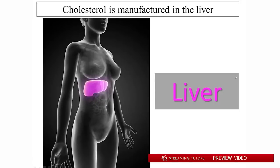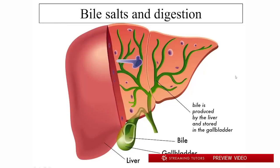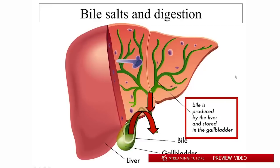Cholesterol is made de novo in humans in the liver and is then released as LDL particles to be taken up by cells elsewhere in the organism. So in general, the cholesterol in the plasma membrane or mitochondrial membrane of a muscle or brain cell was made originally in the liver. The liver makes cholesterol not only for convenience, but also because it is one of the prime users of cholesterol — a lot of the cholesterol it makes goes into the synthesis of bile acids, which are used to solubilize dietary lipids and are stored in the gallbladder, then released into the bile duct into the upper GI tract.